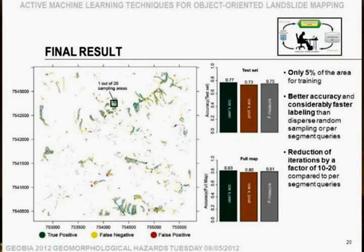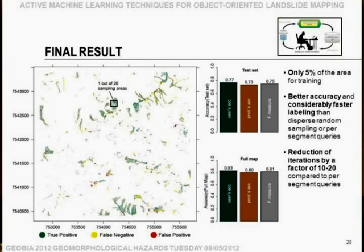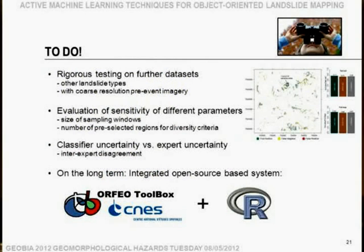After 20 iterations with this active learning query strategy, we get an accuracy of about 75%, and if you consider the labeled data as well, up to 81%. We only labeled 5% of the training area, spatially focused in about 20 batches of small areas. So we get better accuracy with reduced labeling time and a reduced number of iterations. We use R software for both the spatial libraries and the learning algorithm. We still use eCognition at the moment, but in the long term we would like to move to a fully open source system.